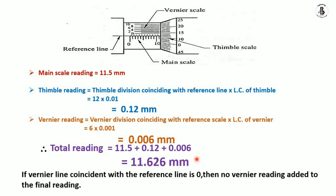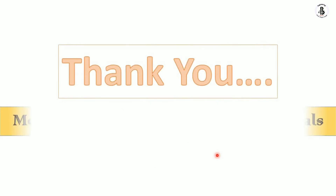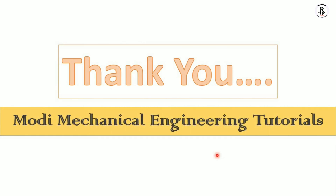Important note: if the vernier line coincides with the reference line at 0, then no vernier reading is added to the final reading. I hope you understand these basics. If you like this, please subscribe and share more mechanical engineering tutorials. Thank you so much.